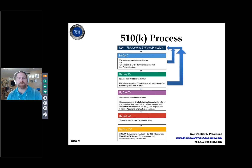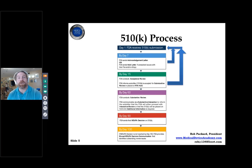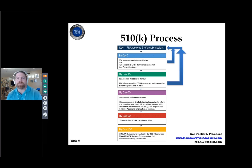Once you pass RTA screening, you enter the substantive review. For the first 45 days you won't hear much. You'll either receive an AI (Additional Information) request, or an interactive review letter — which means the FDA believes they can make a decision within 30 days, usually a positive one. Most submissions receive AI requests, which drag the process closer to 120 days.